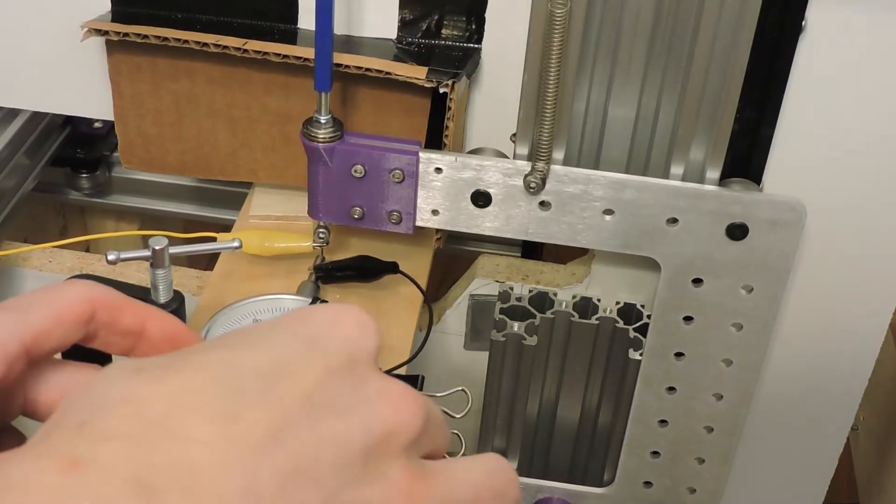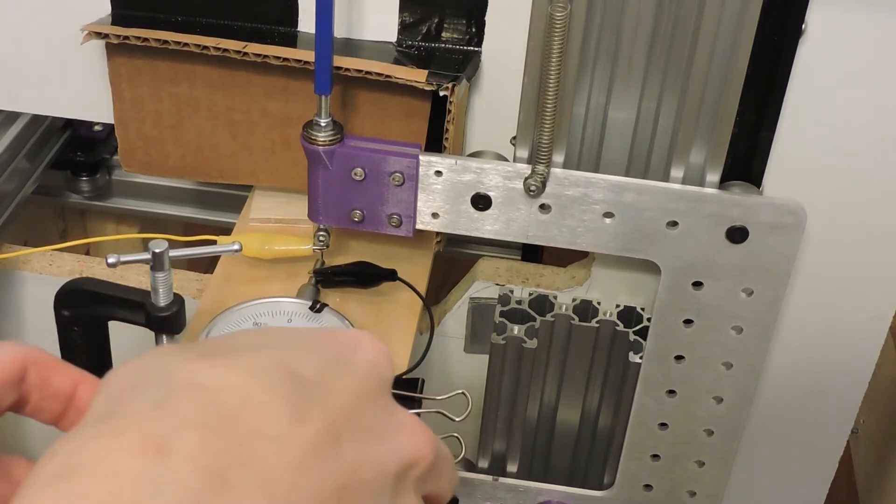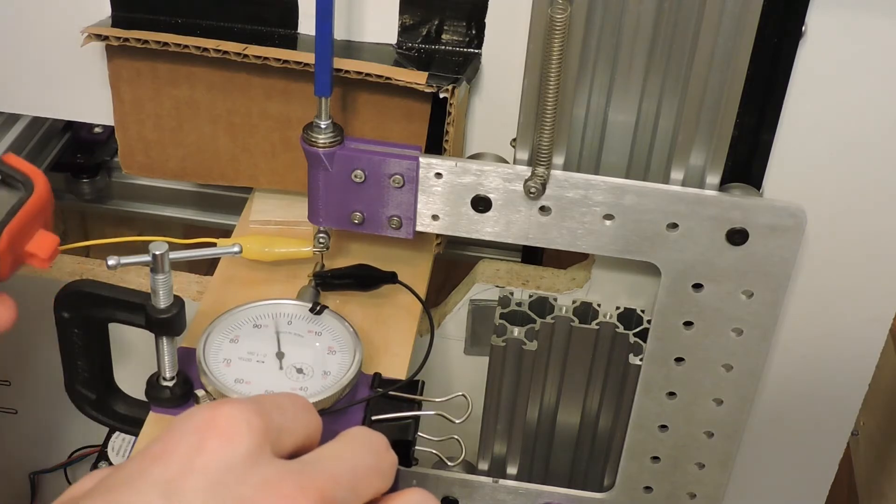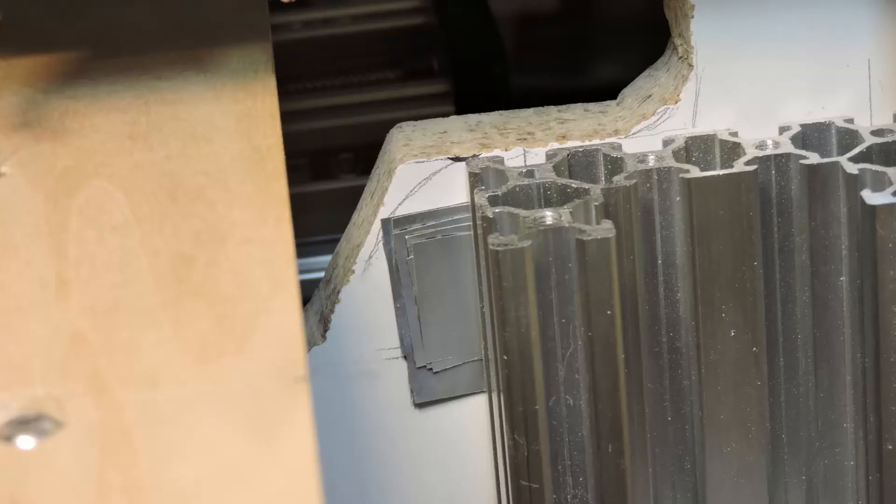So it turned out that the two C beam profiles that I'm using weren't the same height. The lower one needed to get shimmed out from the backer board.